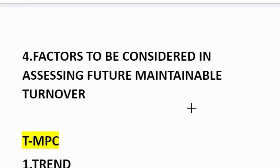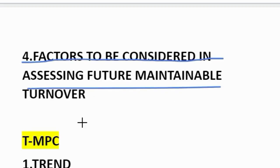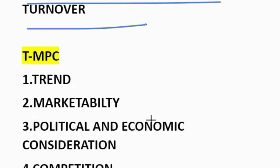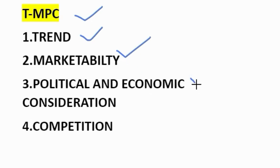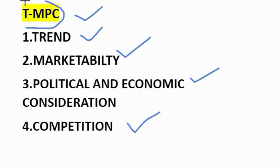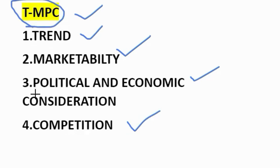Next: factors to be considered in assessing future maintainable turnover. How to remember? TMPC. T for trend, M for marketability, P for political and economic consideration, C for competition.